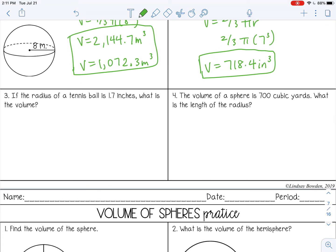Number three, if the radius of a tennis ball is 1.7 inches, what is the volume? So a tennis ball, of course, is a sphere, so we're still using the same formula. Four thirds pi 1.7 cubed. And you get about 20.6 inches cubed.